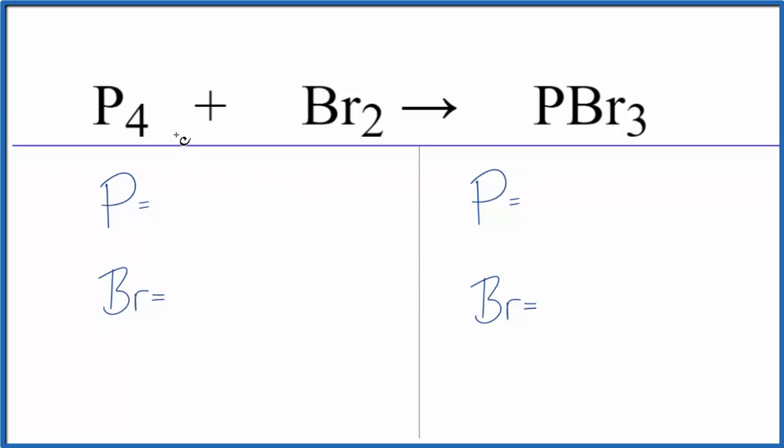Let's balance the equation. We have four phosphorous atoms, two bromine atoms. On the product side, we have one phosphorous and three bromine atoms.